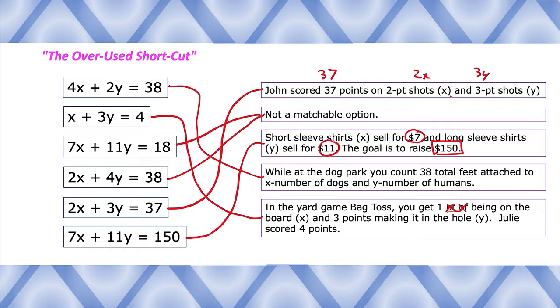All right, that's about it. So again, look for X and a number, look for Y and a number, and look for the total, because that's how you make standard form: a value attached to X, a value attached to Y, and they combine to make some type of total value. All right, that's the overused shortcut, see you in class.